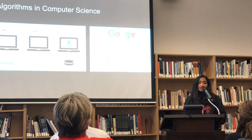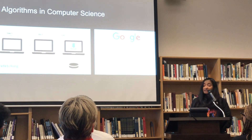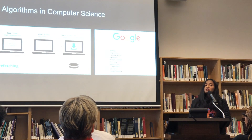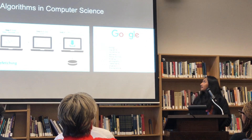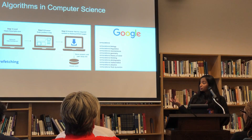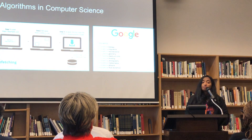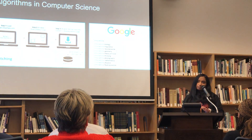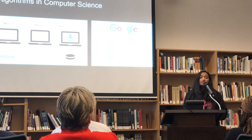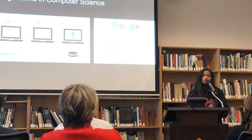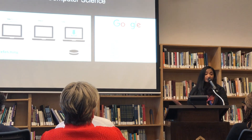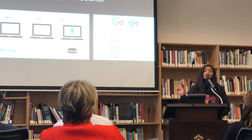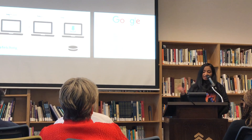In computer science, I use algorithms for things like getting information to a user much faster. Google uses something called prefetching, which is the act of bringing data closer to a user by predicting what they're going to search. How it works is when you type in a couple of letters into the search bar, it figures out all the possible things you could be searching and pulls all that information closer to you so that when you press the enter button, it knows exactly what to pull and you're going to have a cache of data.